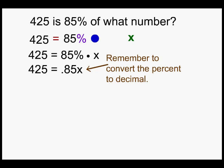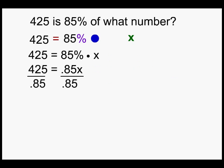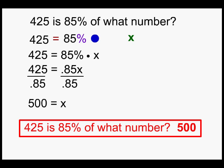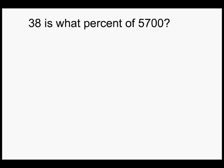Next we need to get the X by itself, so we divide by the number in front of X, which is .85, on both sides of the equation. When we do that we get X equals 500. So 425 is 85 percent of what number? 500. Let's look at the final type.